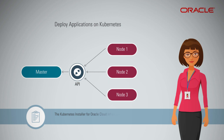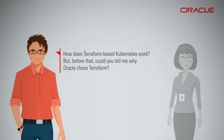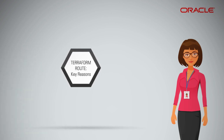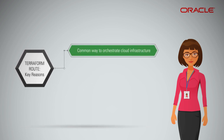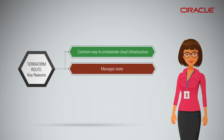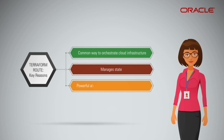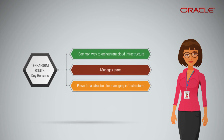The Kubernetes installer for Oracle Cloud Infrastructure provides a Terraform-based Kubernetes installation. Oracle chose to go through the Terraform route for a few key reasons. Terraform is becoming an extremely common way to orchestrate cloud infrastructure. Terraform manages state for us — for example, it is helpful in easily adding or removing nodes from your Kubernetes cluster. The existing Terraform provider for Oracle Cloud Infrastructure provides a powerful abstraction for managing infrastructure that we can leverage and build upon.